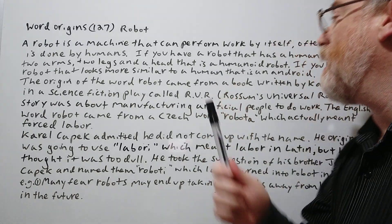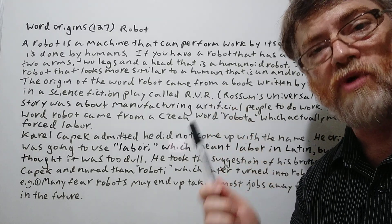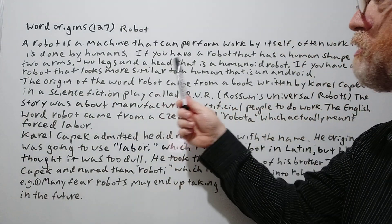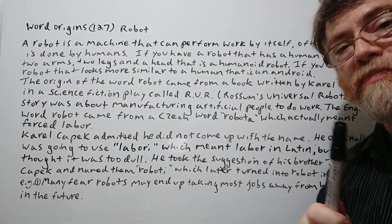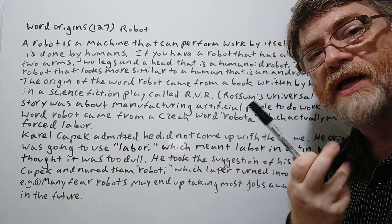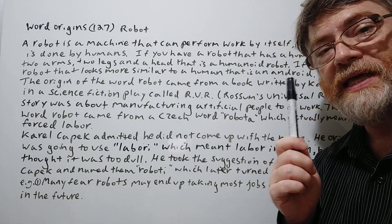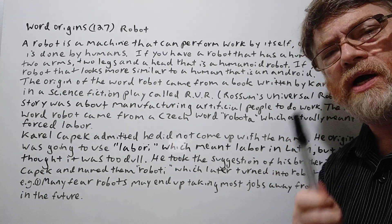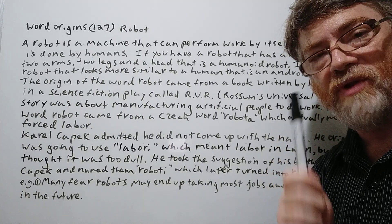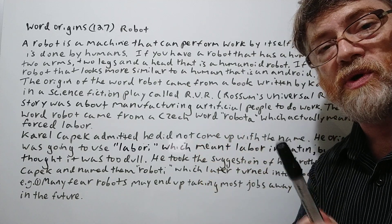If you have a robot that has a human shape with two arms, two legs and a head, that is a humanoid robot. If you have a robot that looks more similar to a human — not necessarily with real skin, but something that looks like real skin and real eyes, and can speak with a human voice and interact — that is an android. I did a video a while back on the difference between robot, android, and cyborg. If you like that idea, you should go back and check those. This video is mostly for finding out the origin of where the word robot came from.